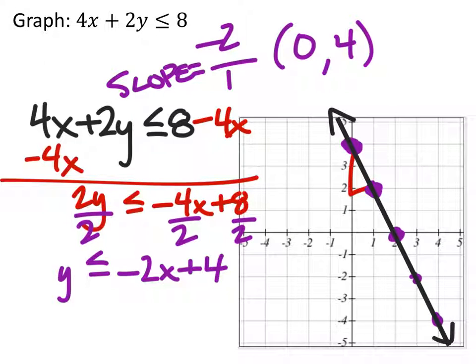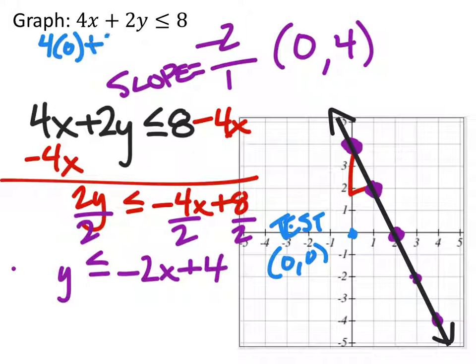So let's go ahead and test our origin. In the original equation, we've got 4 times 0 plus 2 times 0. Is that less than or equal to 8? Well, 0 less than or equal to 8. Yeah, that's true.